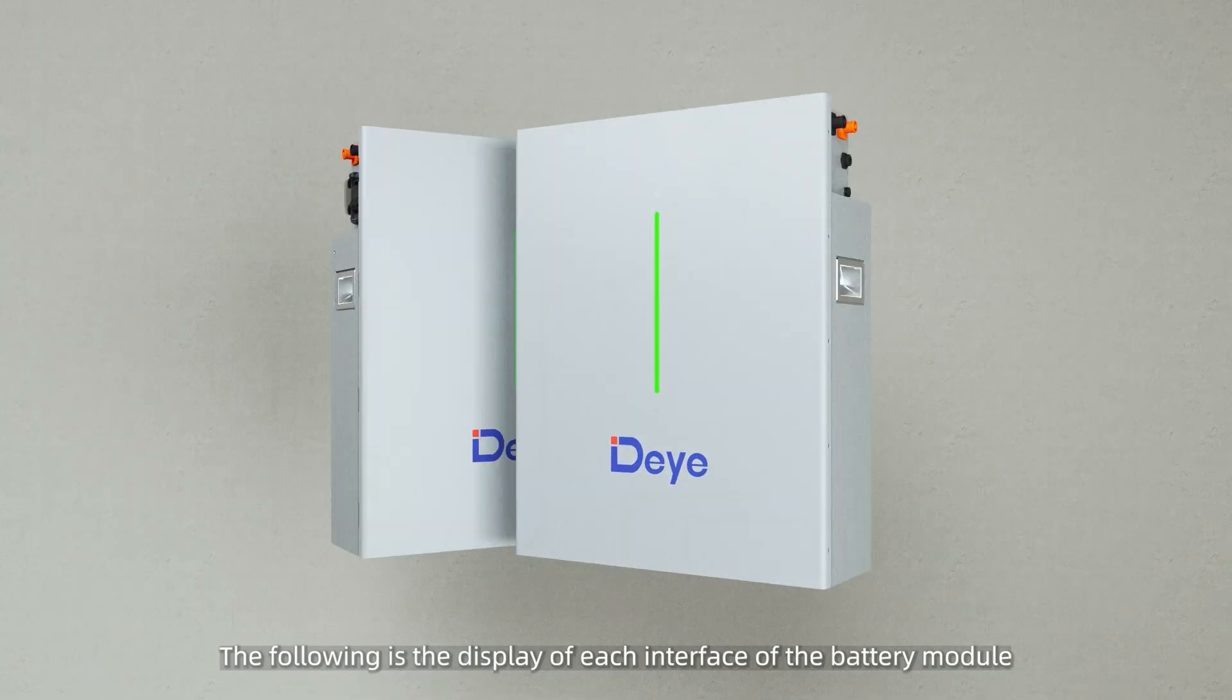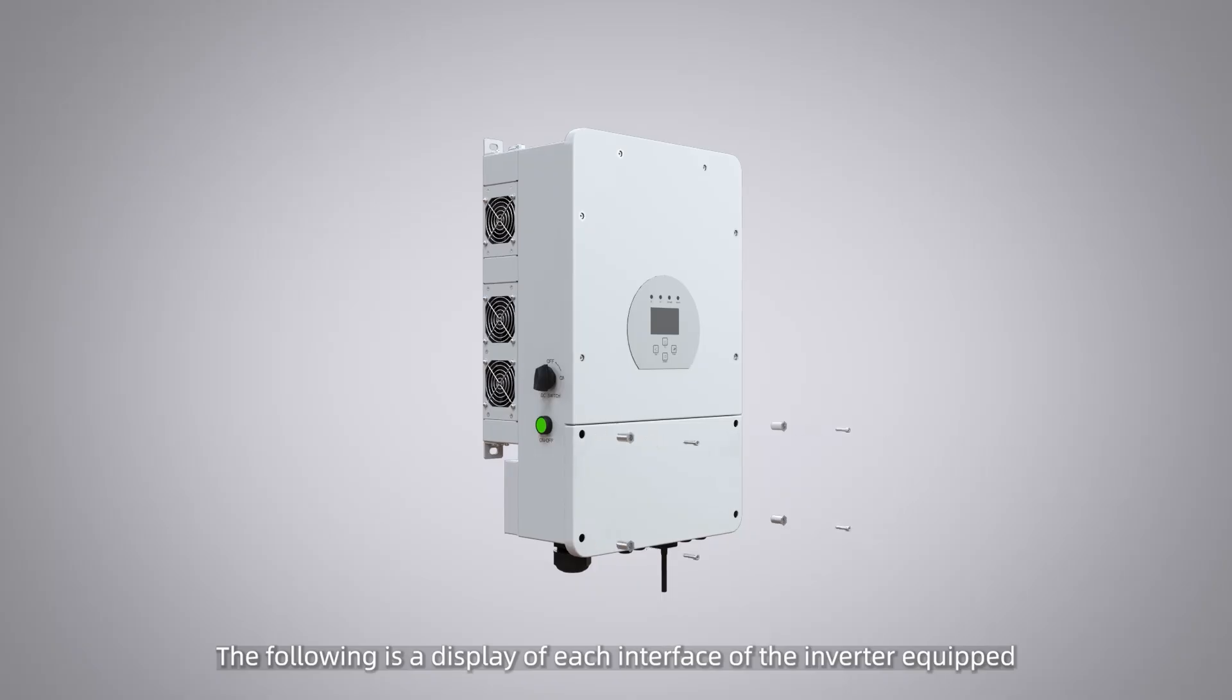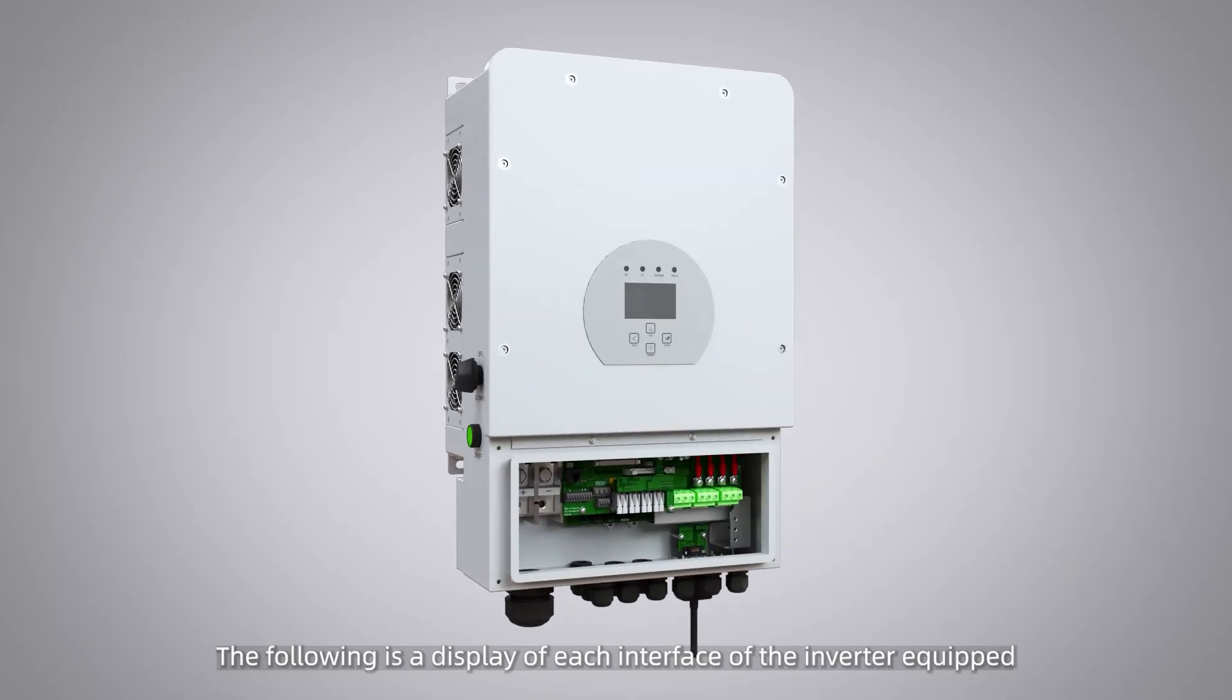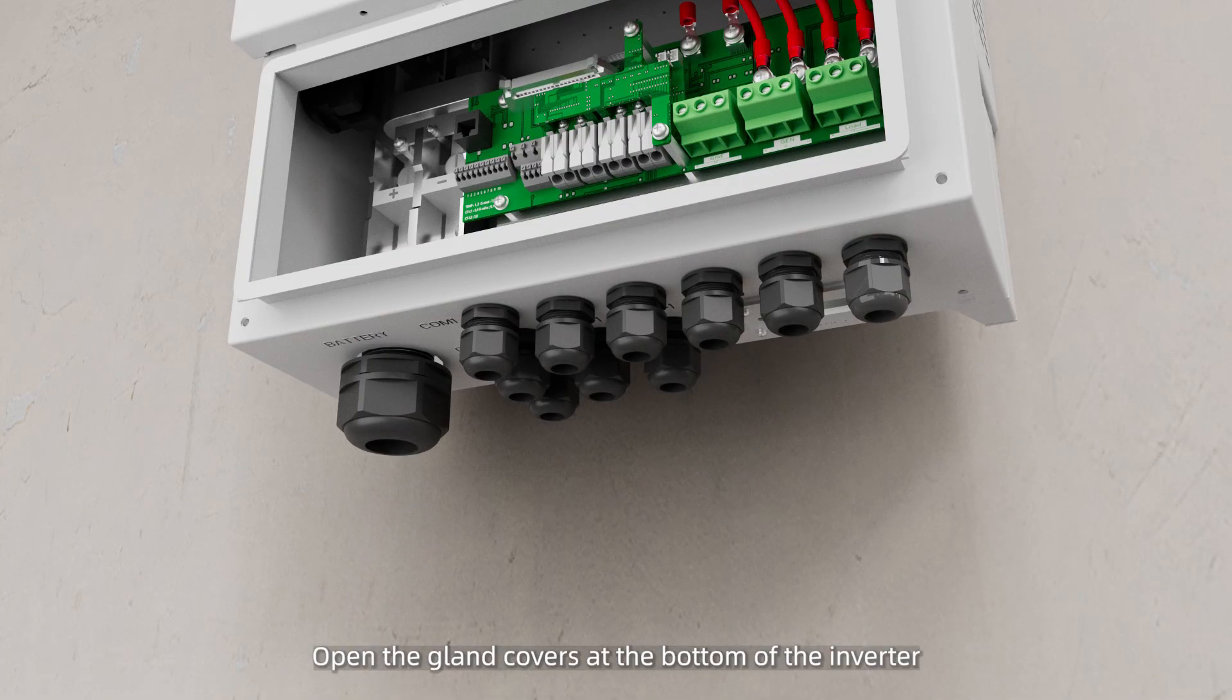Cable connection. The following is the display of each interface of the battery module. The following is a display of each interface of the inverter equipped. Open the gland covers at the bottom of the inverter.